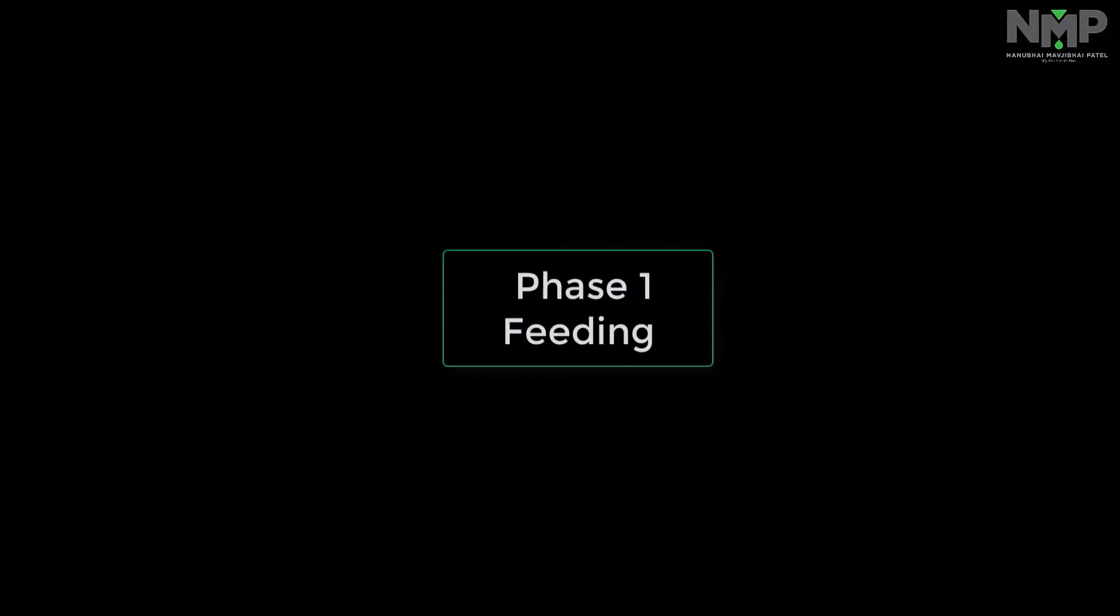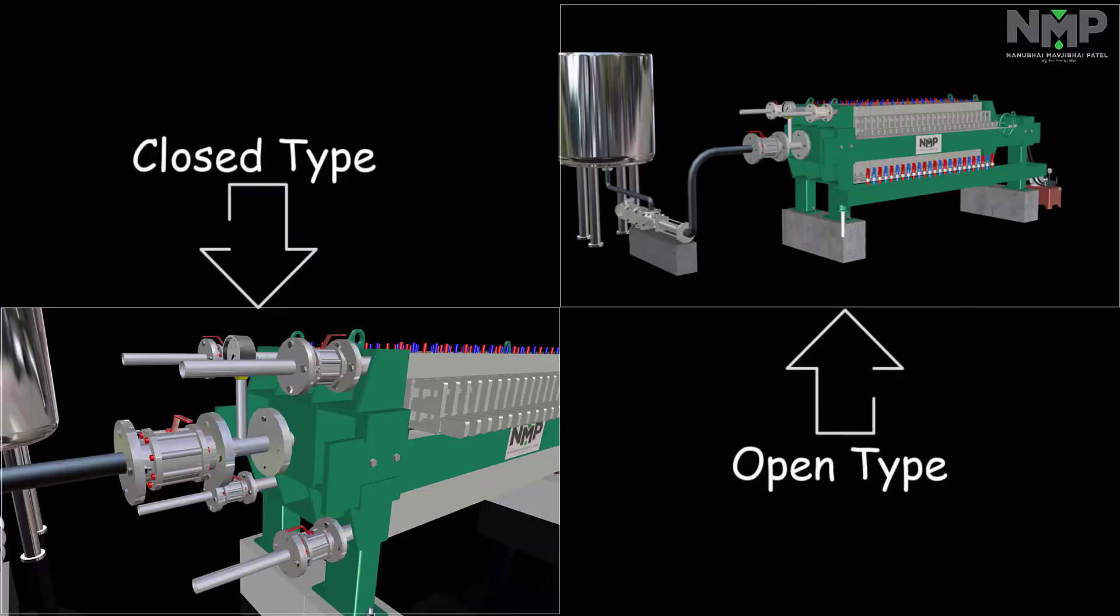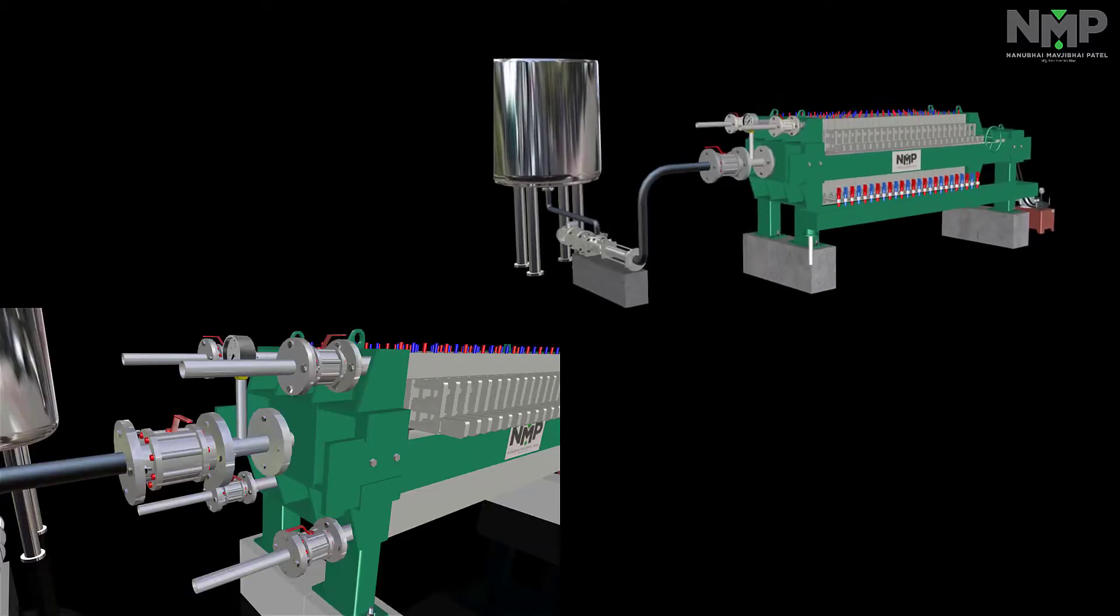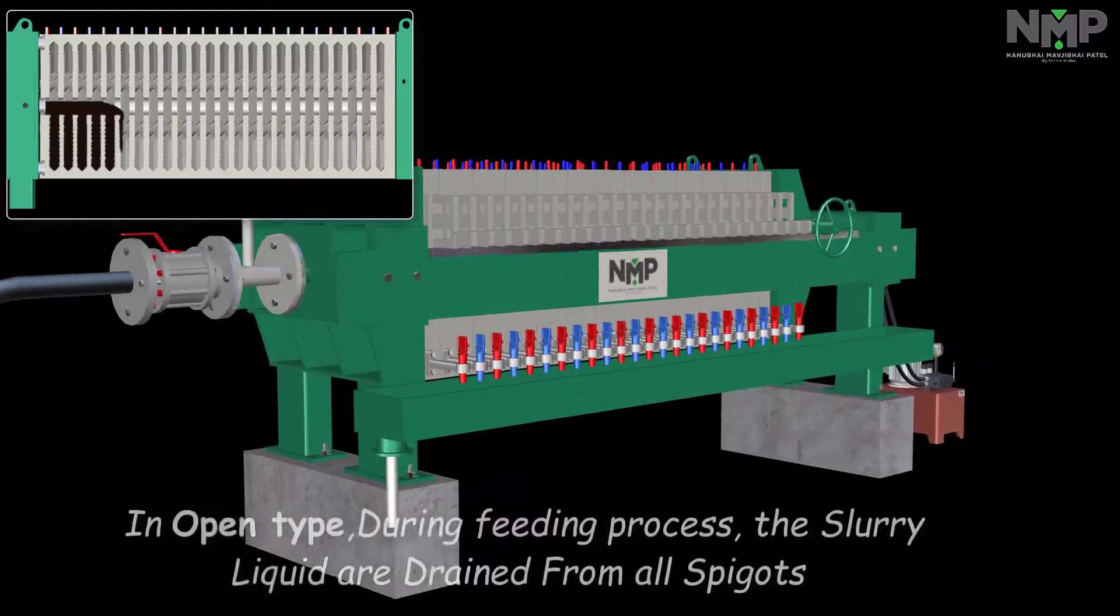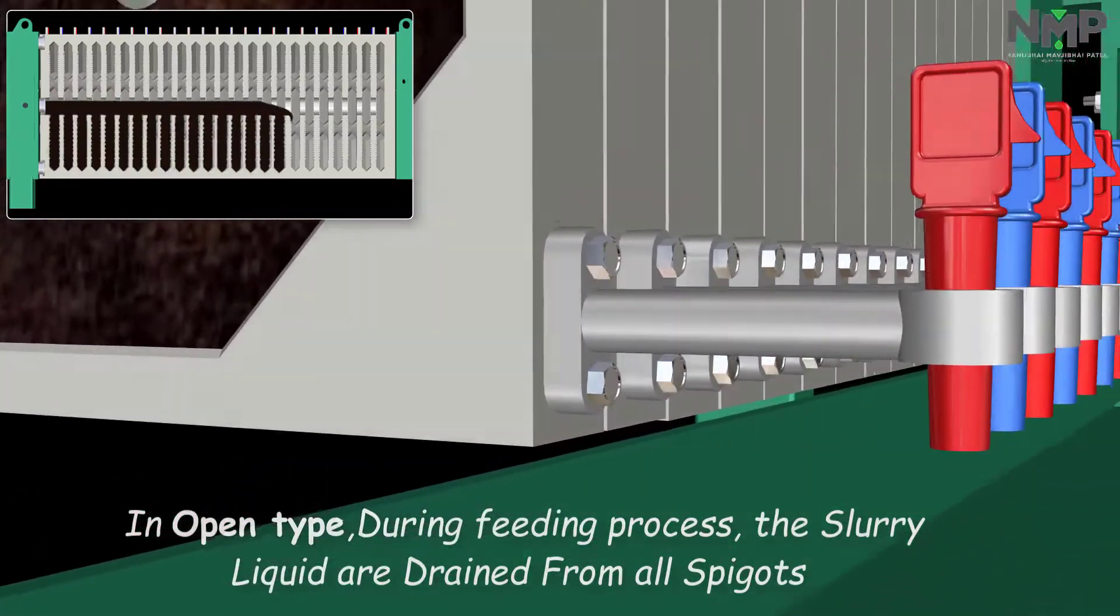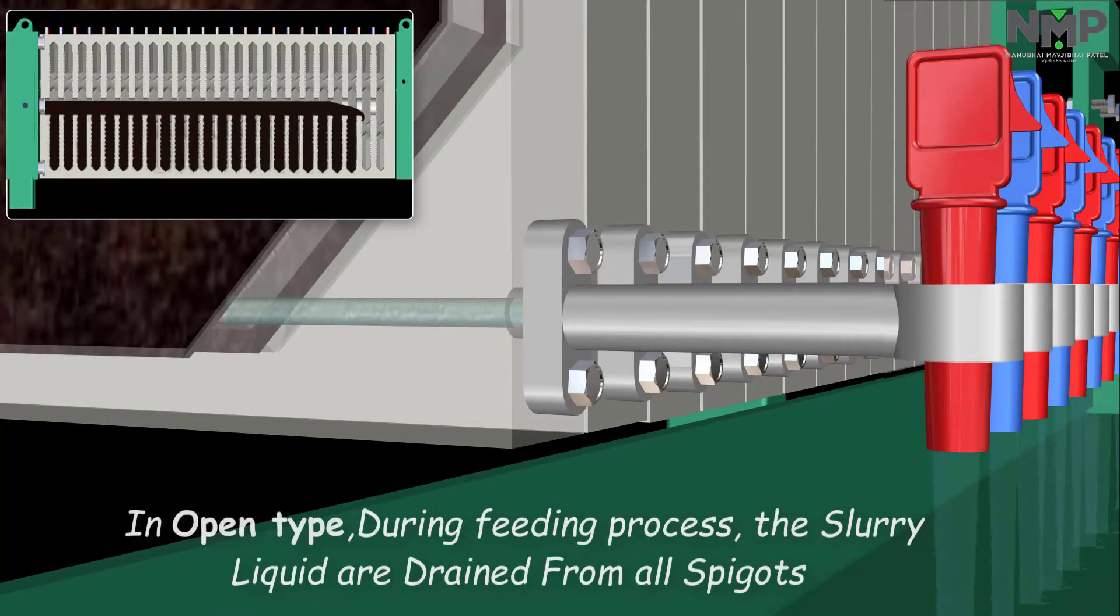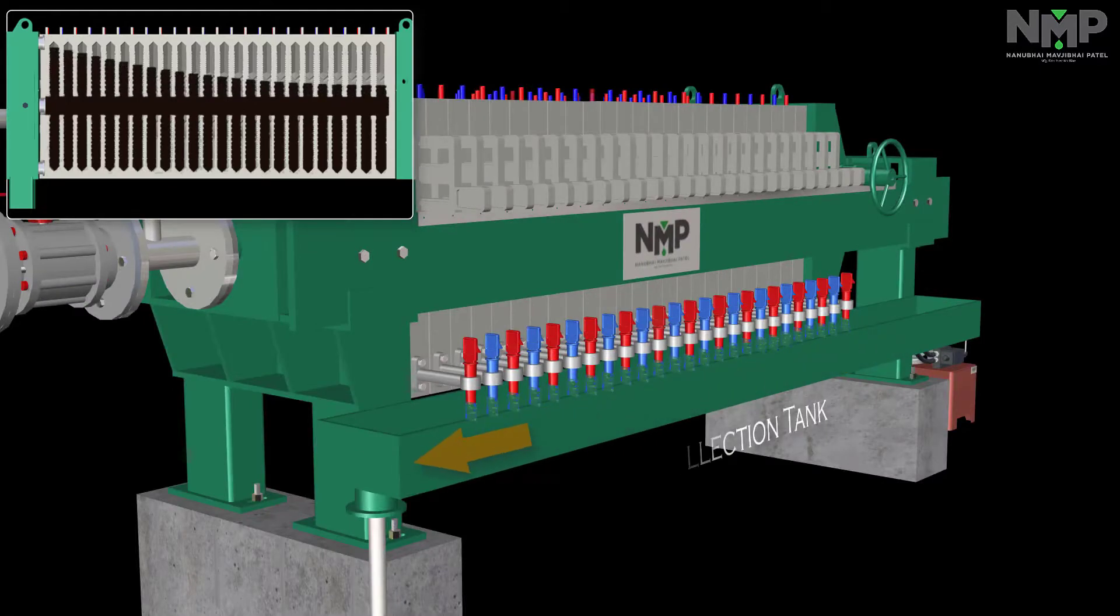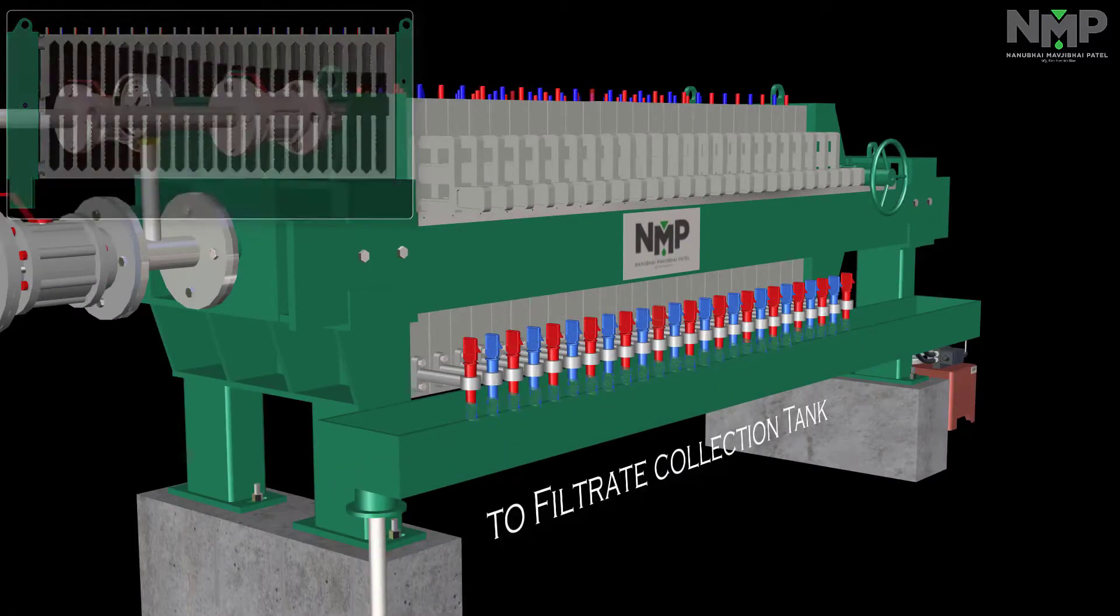There are two options available: open discharge and closed discharge. In open type of delivery, there are spigots in each plate to drain out the slurry liquid. These holes are located in the bottom of the plates. Slurry will now start filling between the plates and water starts draining from bottom passages. The liquid which is coming from taps will be collected in the gutter.